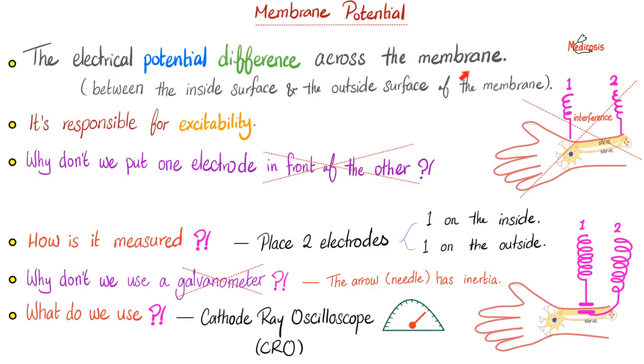What is membrane potential? It's the potential difference across the membrane—between the outside surface and the inside surface. The membrane potential is responsible for excitability. Where should we put the electrodes? One in front of the other? No, this will lead to electrical interference. You should put one on the outside and one on the inside to measure the potential difference across the membrane. Should we use a galvanometer? Galvanometer is for goofs. Because the galvanometer has a needle made of metal or any substance that has mass and therefore inertia. The arrow won't have time to come back and shift forwards again, giving false readings. We should use the cathode ray oscilloscope to measure those oscillations up and down.